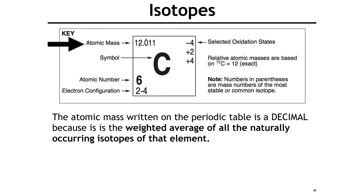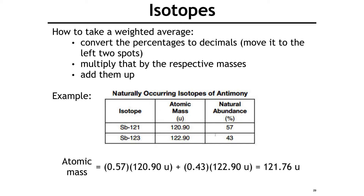To calculate atomic mass, we take a weighted average — not a regular average — because the isotopes exist in different amounts. Convert the percentage into a decimal by moving the decimal two places, then multiply by the atomic mass for each isotope, and add them all up. For example: 0.57 times 120 plus 0.43 times 122 gives you the weighted atomic mass.